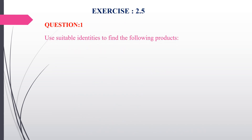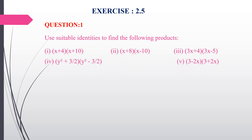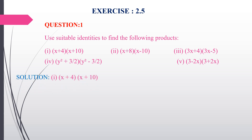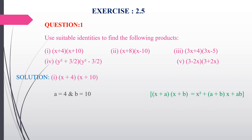First question: use suitable identities to find the following products. There are 5 subdivisions; I will do a few for you. First subdivision: (x + 4)(x + 10). Here we are going to use the identity (x + a)(x + b) = x² + (a + b)x + ab.